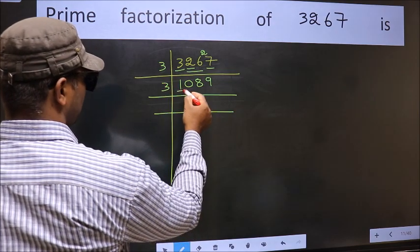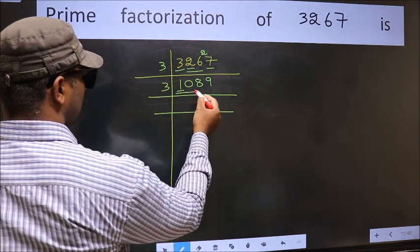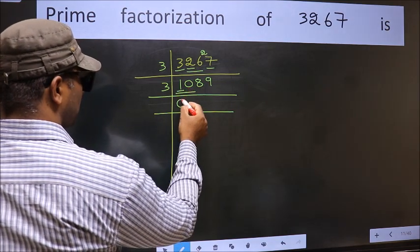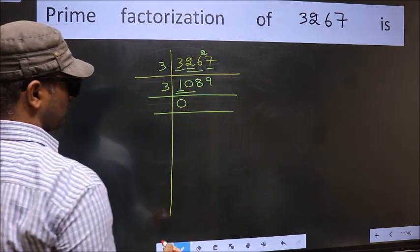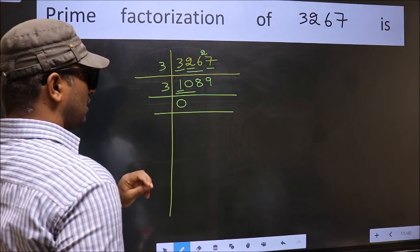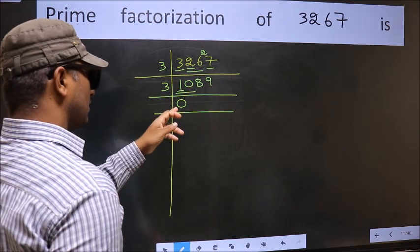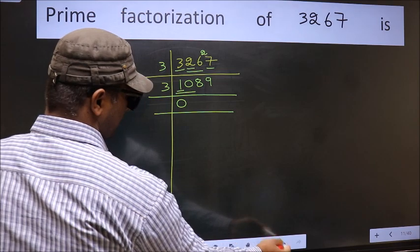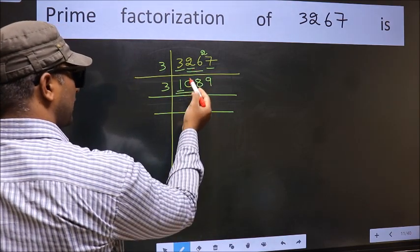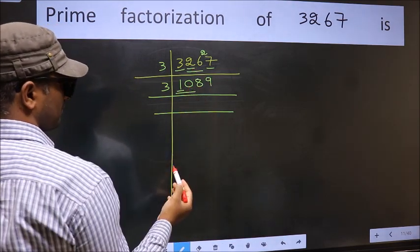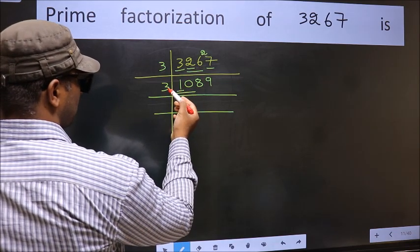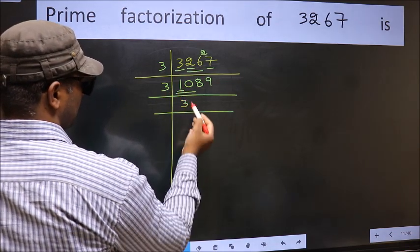So take 3 here. First number 1 is smaller than 3, so take 2 numbers: 10. Whenever you take 2 numbers, compulsory put 0. But 0 at the start does not count, so no need to write 0 at the start. Had it been in between, then 0 is a must. Now 10: a number close to 10 in the 3 table is 3 threes are 9.